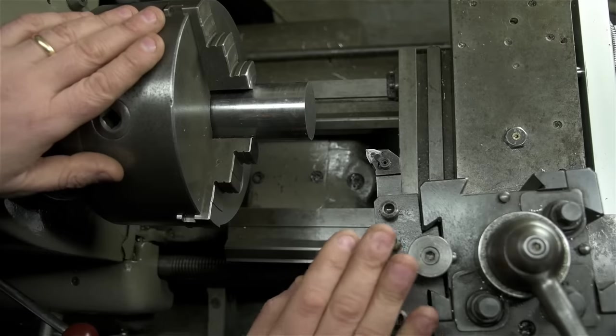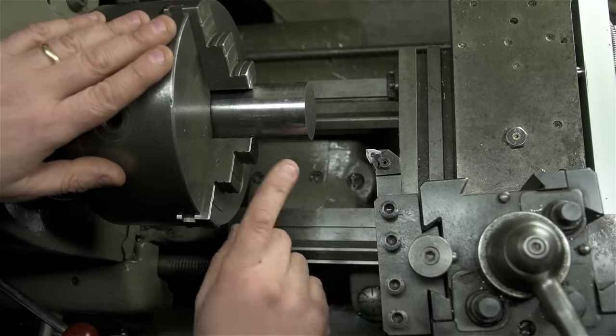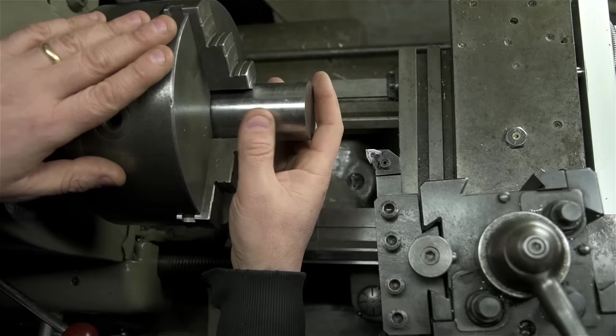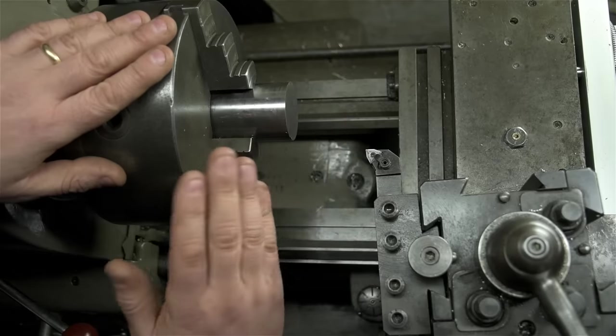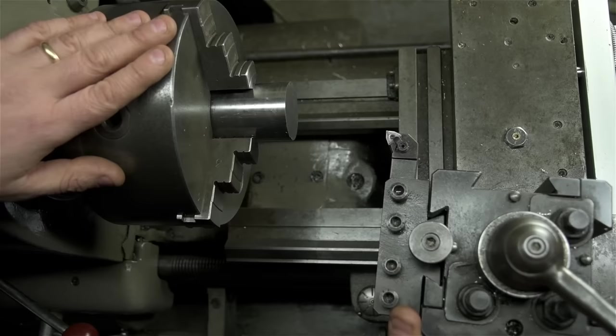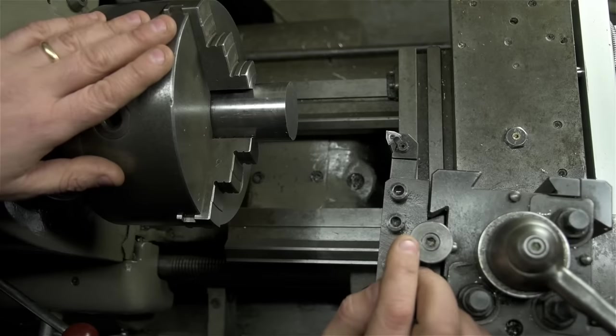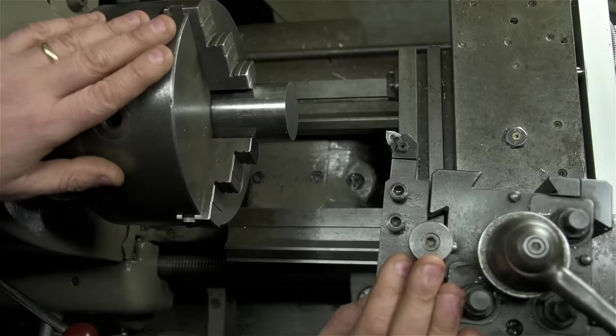I want to set the stage for why we're doing what we're doing today. A DRO works great as long as nothing changes. We're trying to keep track of the position between your work and the cutting tool. If your work slips in the chuck while you're working, it's game over. You have to start again. If you loosen your tool post and relocate your tool, swing your top slide to cut a chamfer, that's not going to play nice with the DRO.